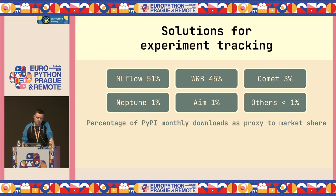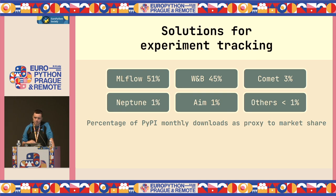This is a very important problem, and there are well-established robust solutions. Looking at the market share of different experiment tracking frameworks, we see that MLflow and Weights & Biases capture most of the market. Then we have Comet, Neptune, AIM, and many others. Overall, MLflow and Weights & Biases are basically the two most important ones, while the others have a very marginal market share.